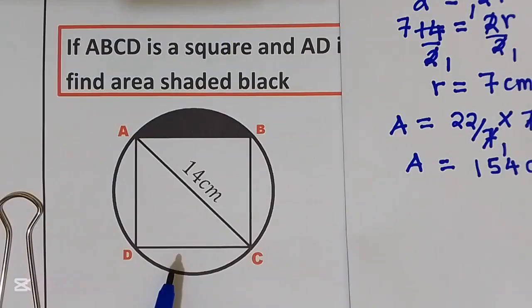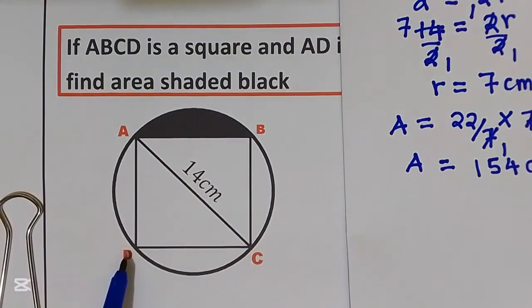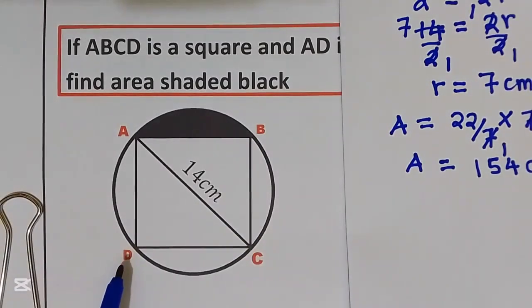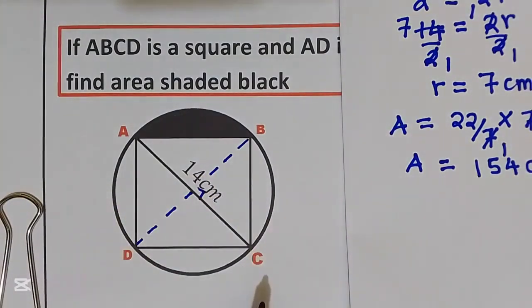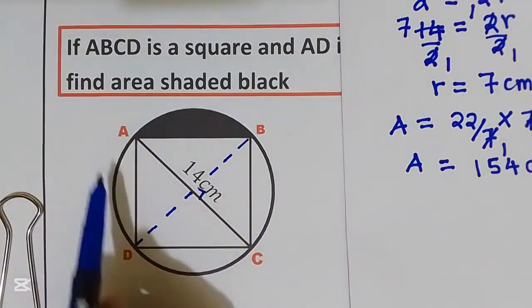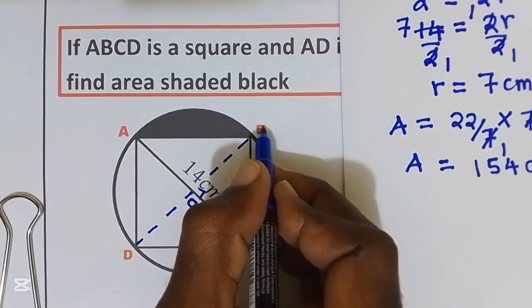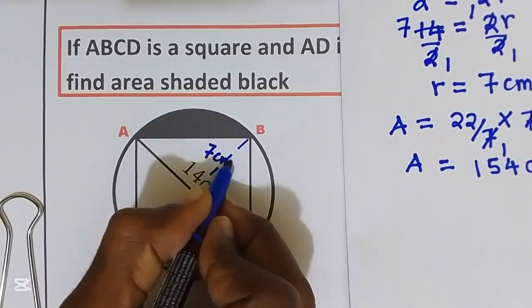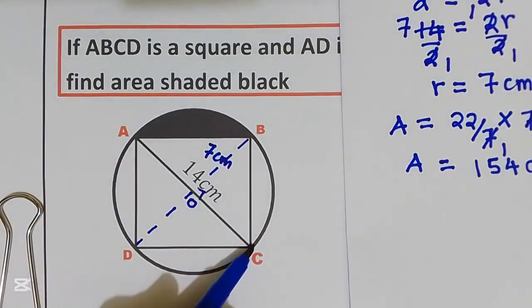Now let's go and find the area of square ABCD. They have given to us the diagonal AC. Since this diagonal is the diameter, I'm going to construct another diagonal BD. This gives us right-angled triangles. I'll call the center of the circle, where the distance to B or D is the same as the radius, which is 7 centimeters. So I have a right-angled triangle with a base of 14 and a height of 7.